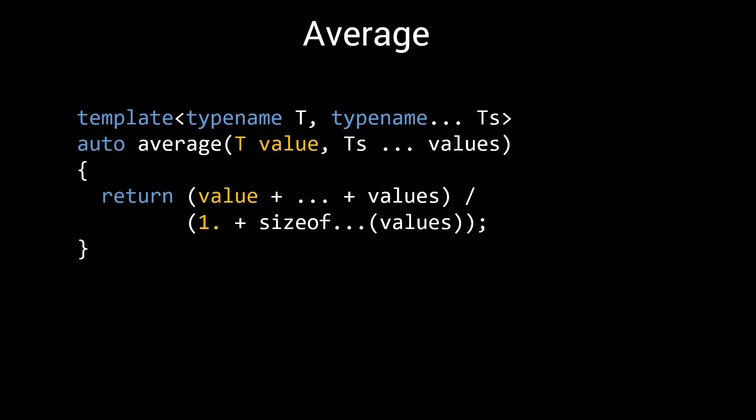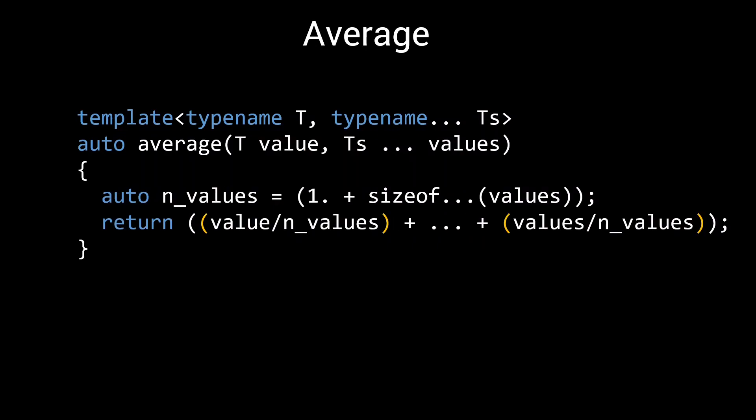If you want to support computing the average of many big values, you might want to slightly rephrase this implementation, and already divide each of the values by the total number of values, before adding them up. Note the additional parentheses used to make it clear to the compiler how to expand the fold expression.